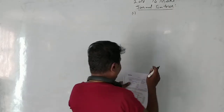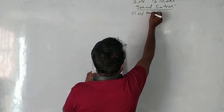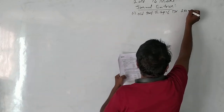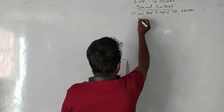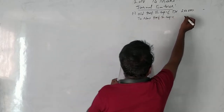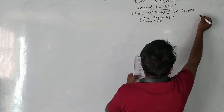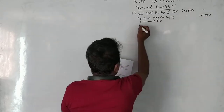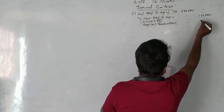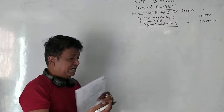Journal Entry 1: Old preference share capital account is debited ₹2 lakh. They are reducing from ₹100 to ₹50 — sacrificing ₹50 per share. There are 2,000 preference shares, so the new preference share capital is ₹1 lakh, and the remaining ₹1 lakh is transferred to capital reduction account. So ₹1 lakh is now in the capital reduction account.